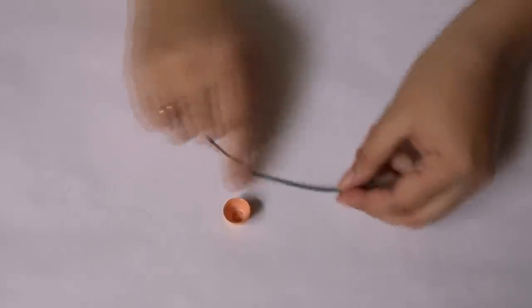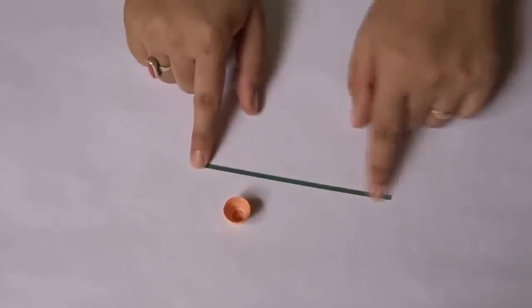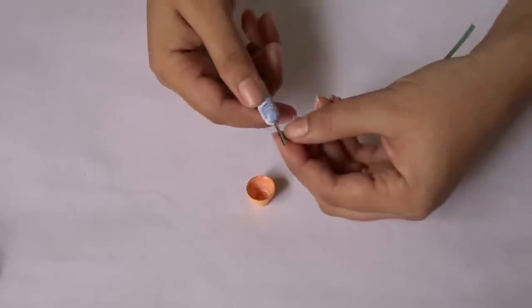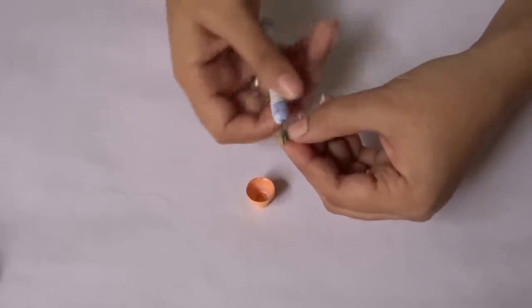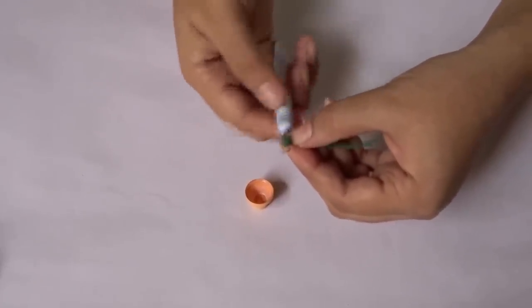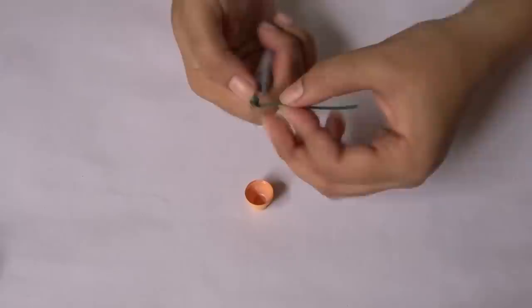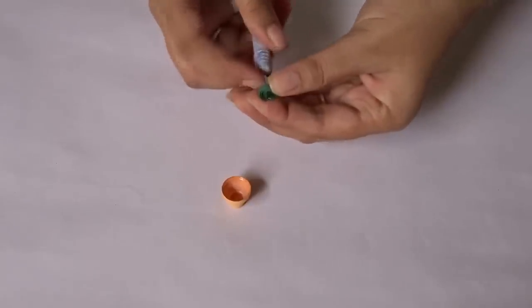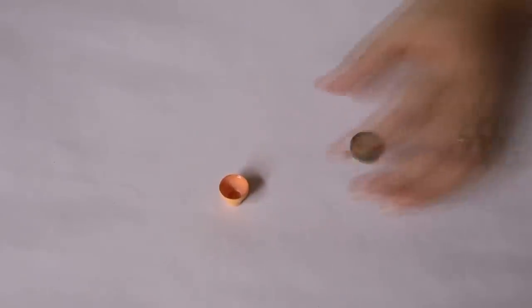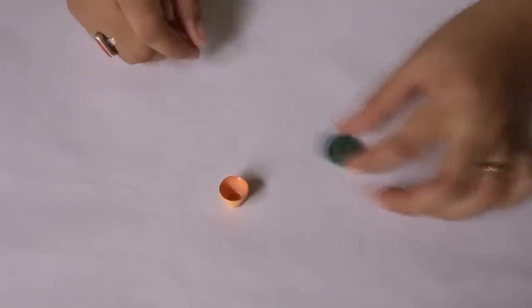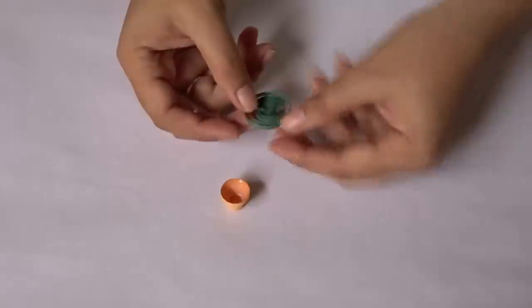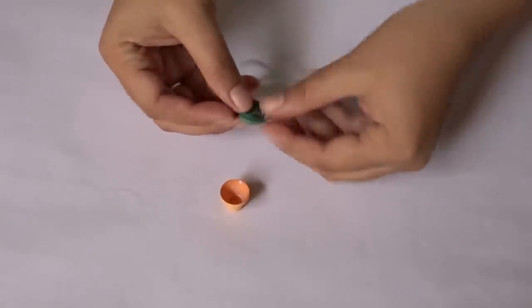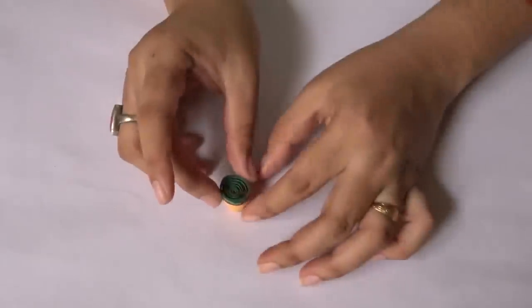Take a green strip of 7 inch or 8 inch. Roll it and release it so that it can take its own shape. Now adjust the quill in such a way so that it will go inside the pot.